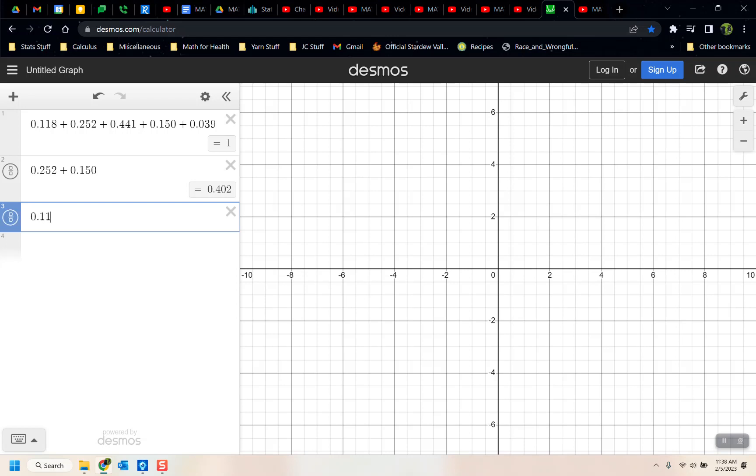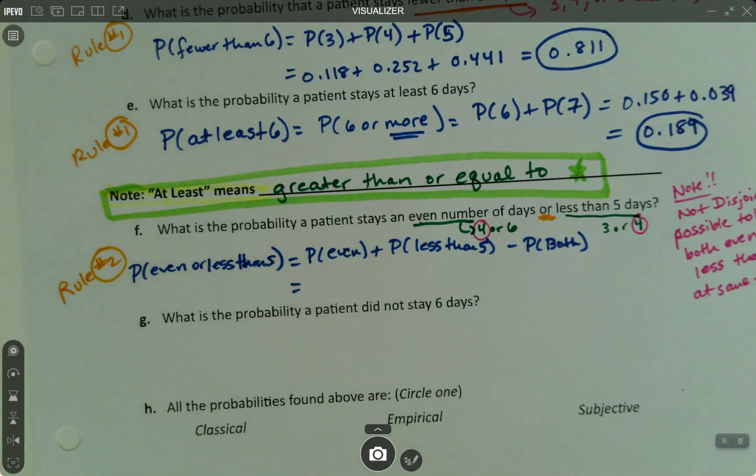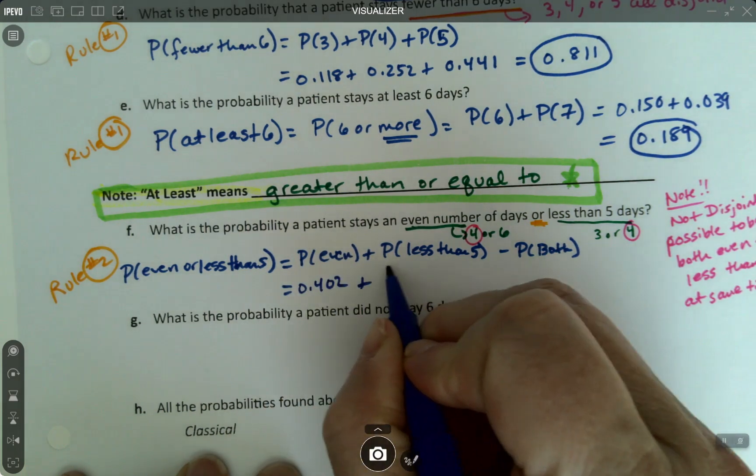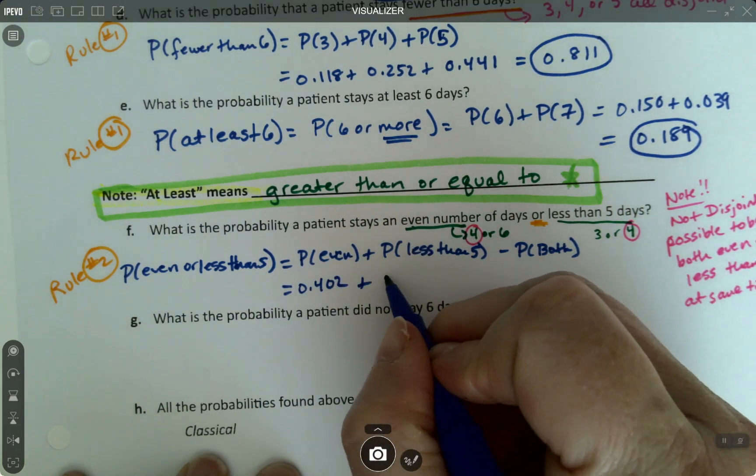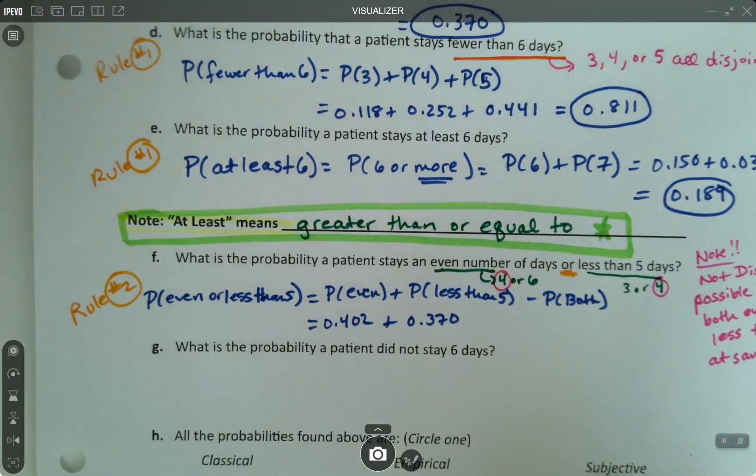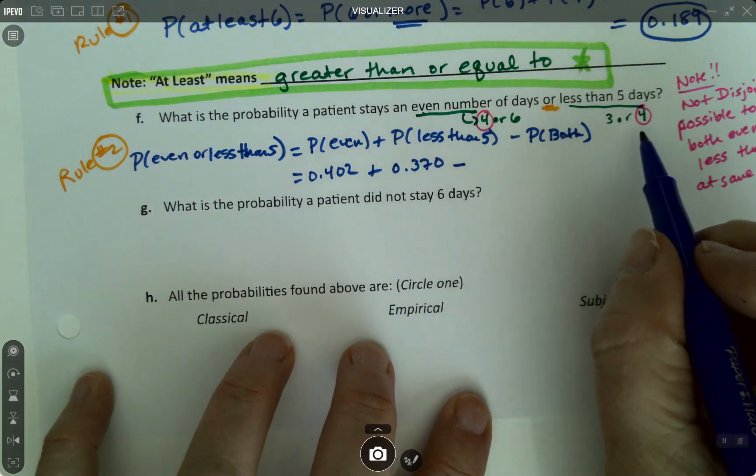Less than five, I'm just going to add those up. That's three and four. So zero point one, one, eight plus zero point two, five, two. So zero point three, seven. So I'm going to add those up. So less than five or even, zero point four, zero two plus less than five we just did. That's zero point three, seven, oh. It's actually up here, right? Because three or four is less than five.